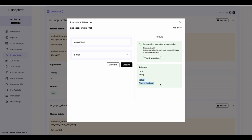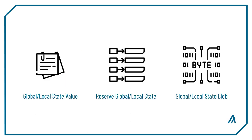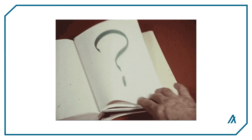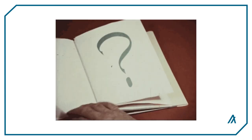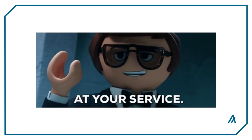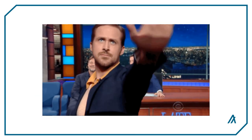Today we learned how Beaker handles states in Algorand smart contracts. We learned that there are three types of states you can define for both global and local state with Beaker, and that when the smart contract is compiled, it generates an extensive ABI that includes state information. If you have any questions about the video or the code demos, head over to the official Algorand Discord channel and get help from the developer relations team. That's it for today — let's move on to the next video.